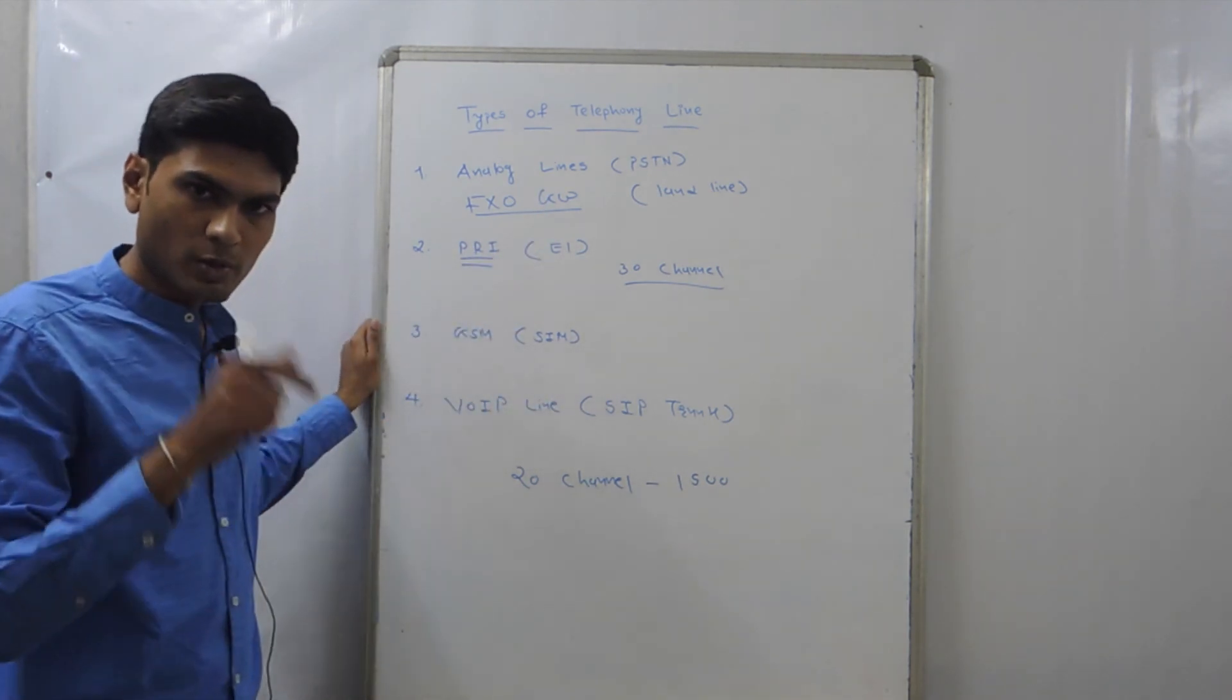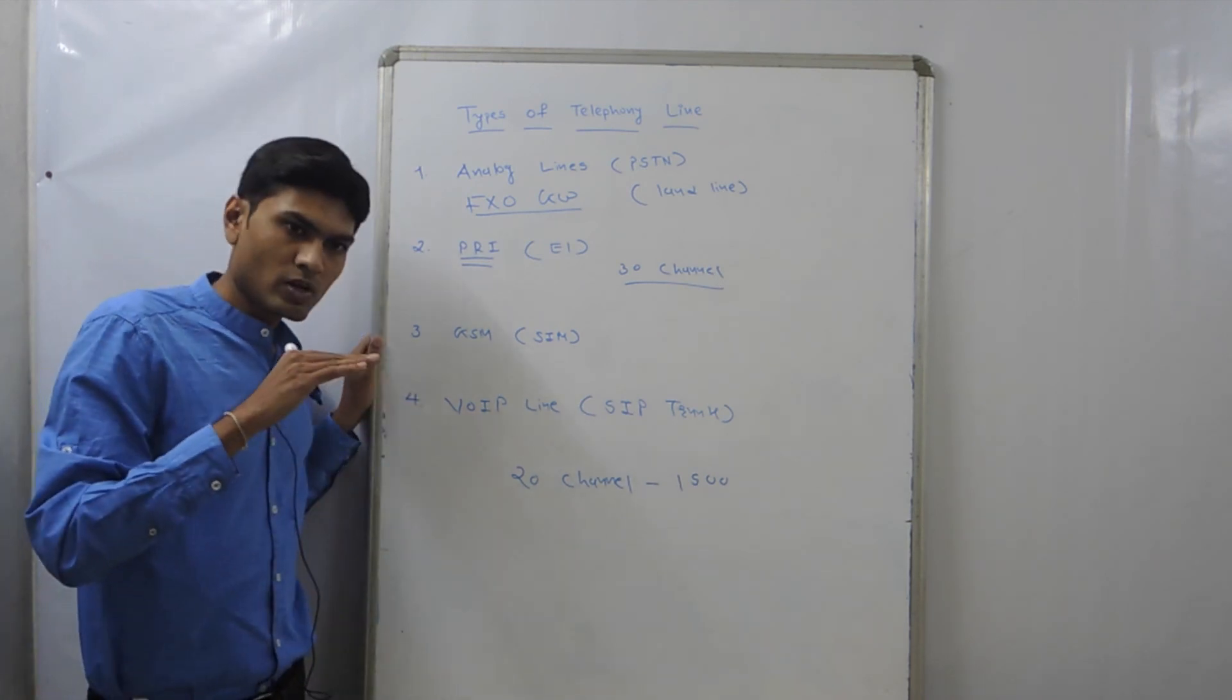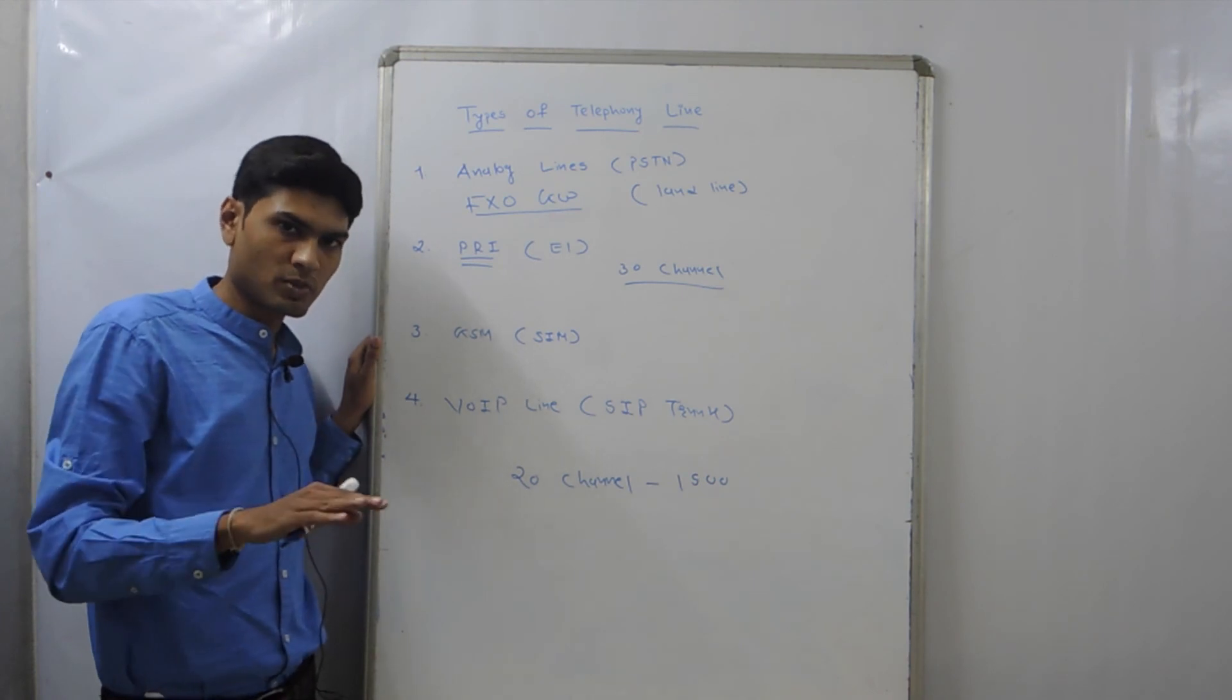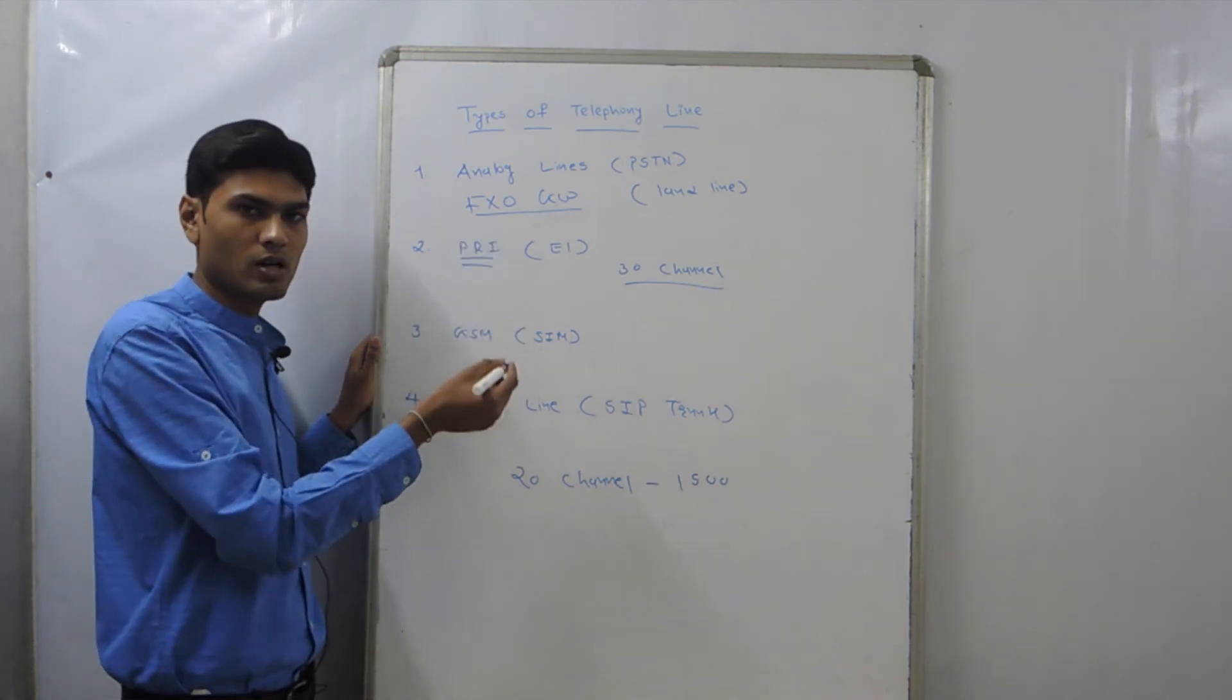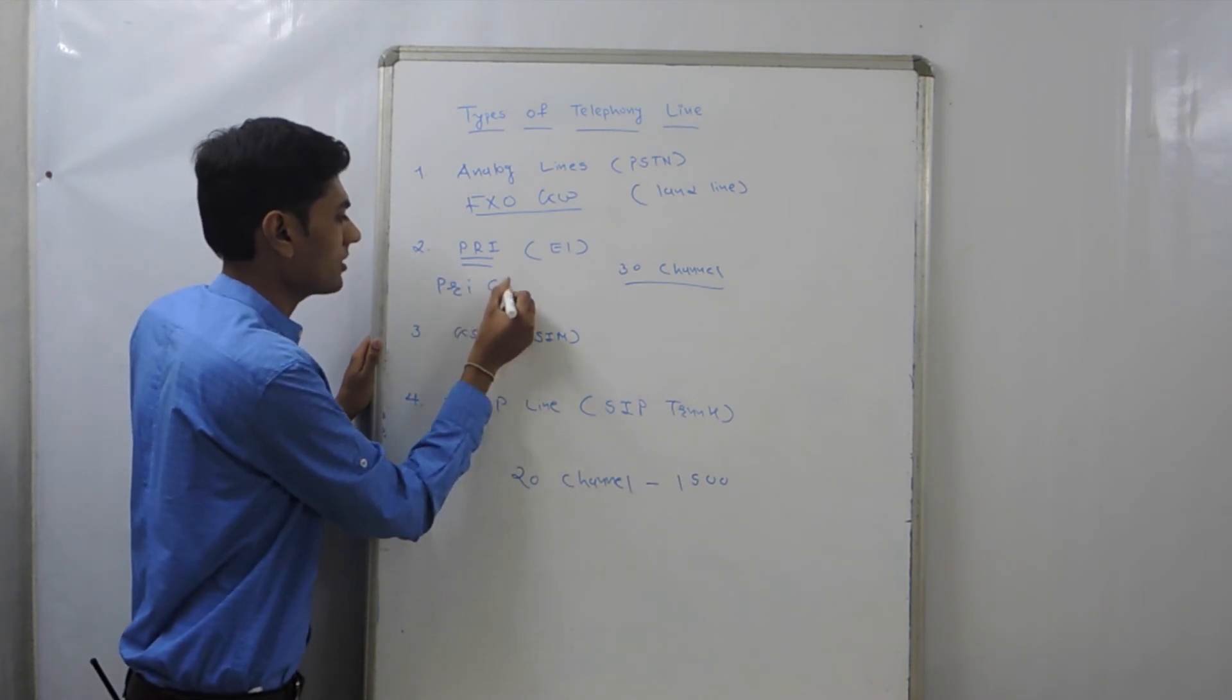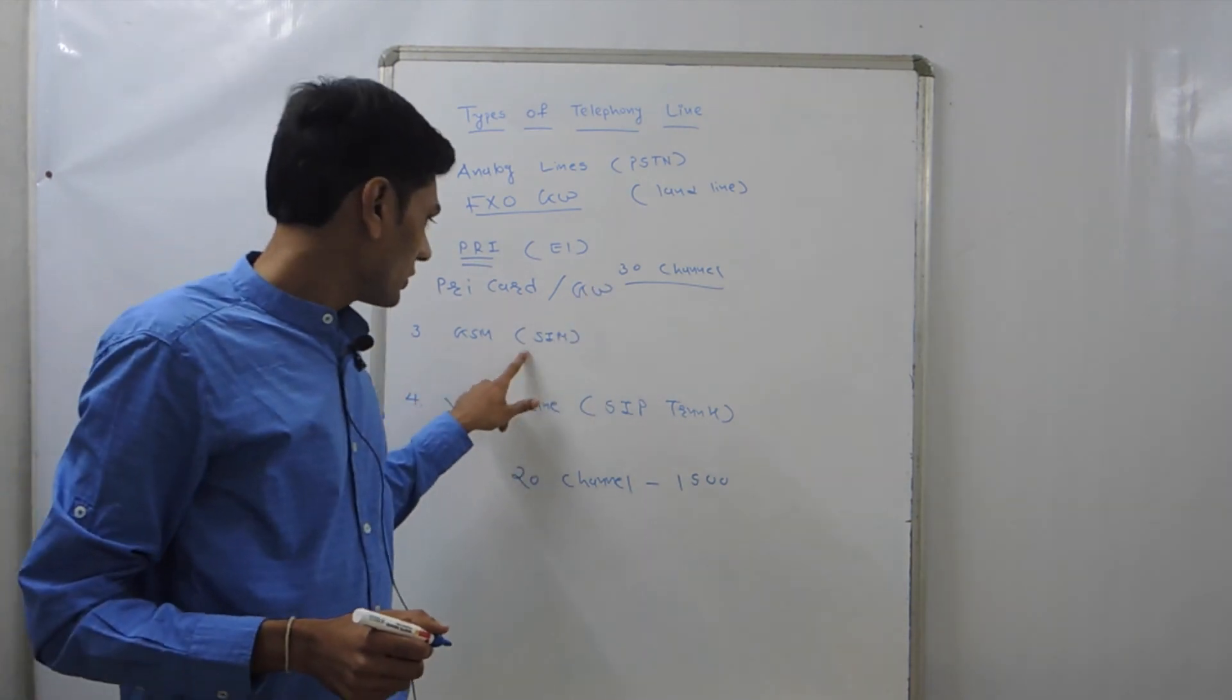Second is the PRA. To connect PRA line into the CNAB server, either you can put PRA card in CNAB server in PCI Express slot, or you need to have a PRA gateway. So either PRA card or PRA gateway.